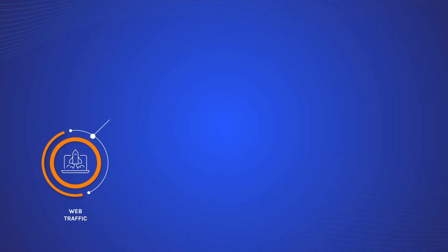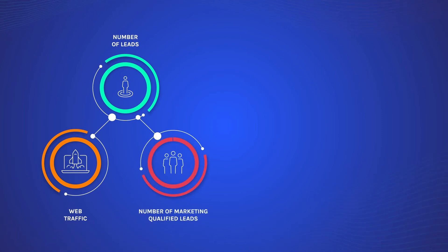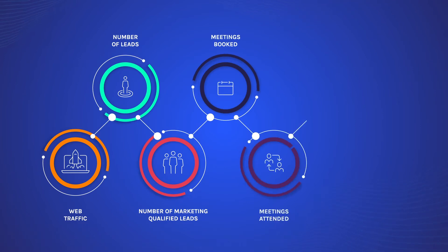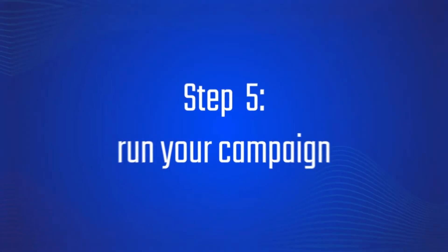Just as important as knowing your demand gen goals is knowing what metrics to track. And we know in marketing there are loads of metrics — but how do we know which ones are the most important? Cognizum's demand gen team have a list of must-track metrics, and here it is. We want to be tracking things like web traffic, number of leads, number of marketing qualified leads — those are the leads that fit your ICP — meetings booked, meetings attended, sales qualified opportunities, and of course the big one: revenue.